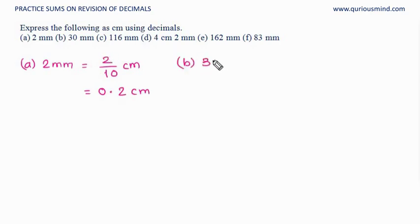B, 30 millimeter. Converting it to centimeter, we'll divide by 10, and that gives me 3 centimeter. There is no digit at 10th place, so that is 3.0 centimeter.